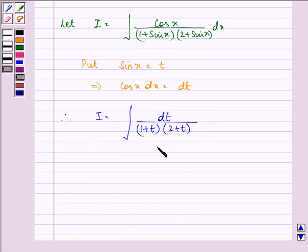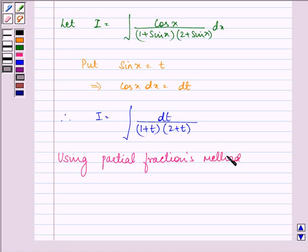integral dt upon 1 plus t into 2 plus t as integral 1 dt upon 1 plus t